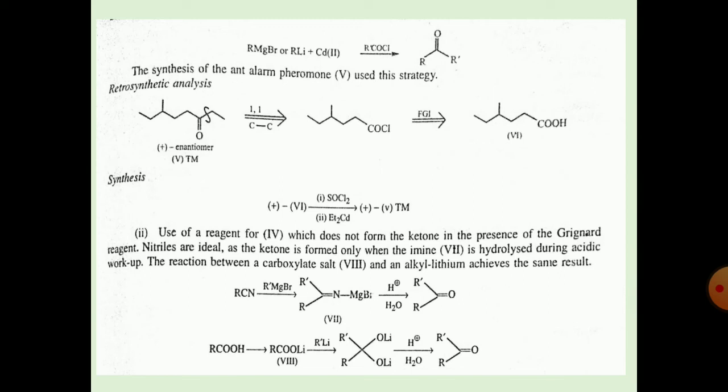The second approach uses a reagent that does not form a ketone in the presence of Grignard reagent. The ketone is formed only when the iminium is hydrolyzed during acidic workup. Also, the reaction between a carboxylic salt and alkyl lithium achieves the same result. First, alkyl cyanide (RCN) reacts with RMgBr, forming RC(=O)MgBr, and then H+/H2O gives the ketone. Alternatively, RCOOH forms RCOOLi, which reacts with RLi to give a tetrahedral intermediate, and H+/H2O gives the ketone.